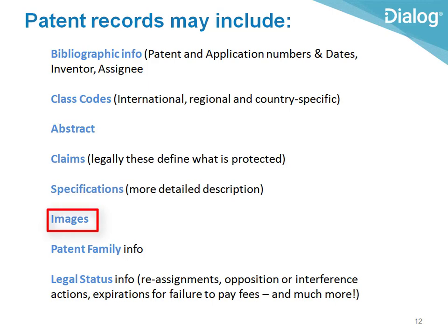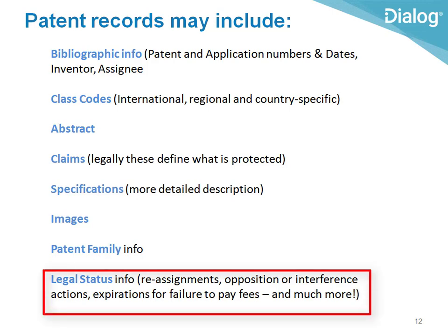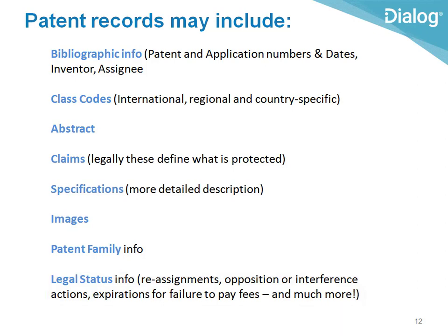There may be images, and a patent family — which we'll talk about in a bit — but basically it's a group of patents related to each other, either because they're essentially the same patent in different countries, or because they share some or all of the same application numbers cited as priority. There may also be legal status information showing things like if the patent has been reassigned or bought and sold to a new owner, or if it's been terminated for failure to pay a maintenance fee. Some of our databases have all of this information, while some have just parts, so you can learn more in our separate video called Patent Databases on Dialog.